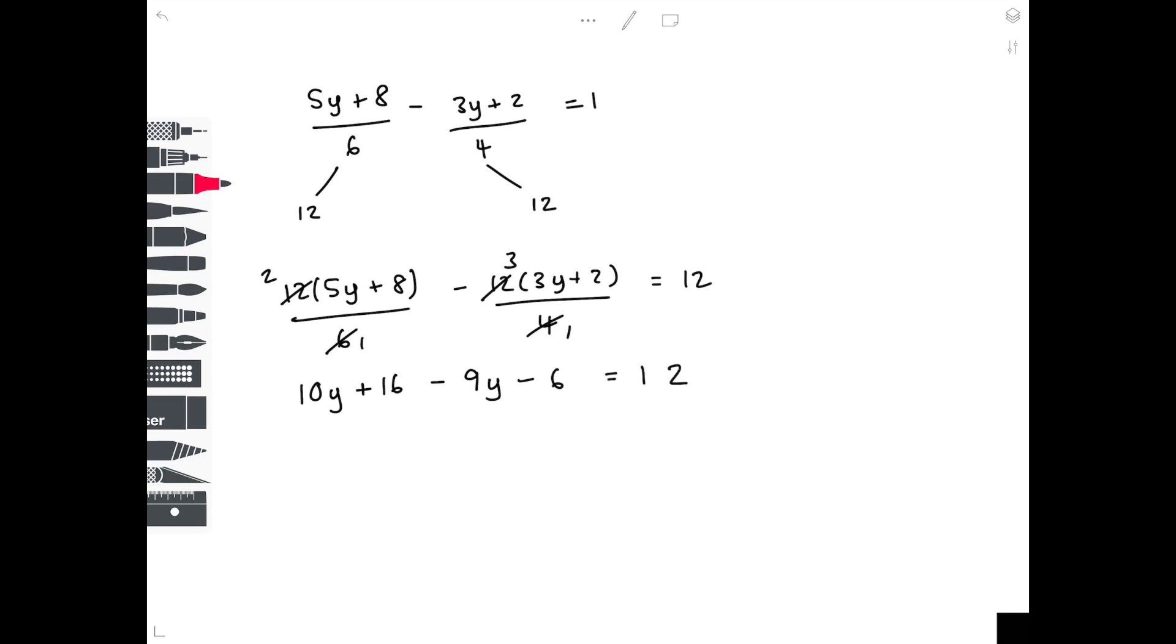Collect together your y terms. So 10y minus 9y is y. 16 minus 6 is 10. That equals 12. To get y by itself, you want to take away 10 from both sides to get a final answer, which is y equals 2. And don't forget, you can substitute y equals 2 back into the equation to make sure that you've actually got the right answer.